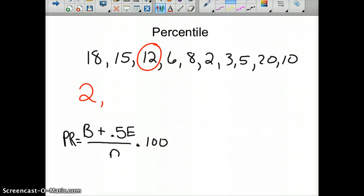To find out how you did with respect to the class, you're going to arrange these in order. So let me do that. So 2 is the lowest, then 3, then 5, then 6, then 8, then 10, then 15, then 18, then 20.